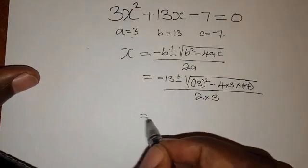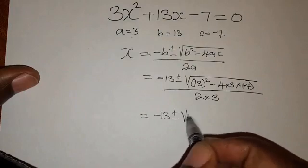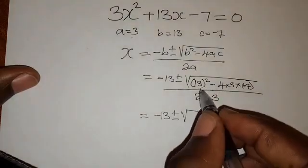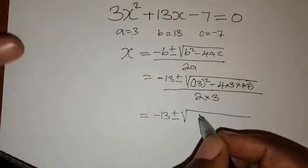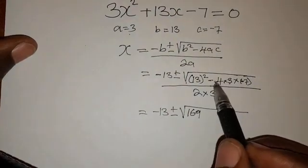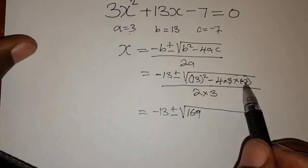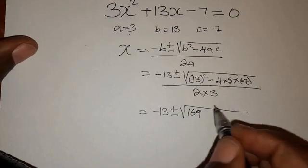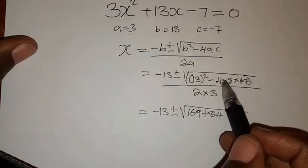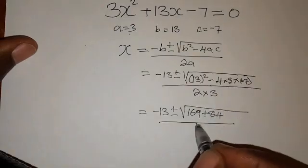So we are going to have negative 13 plus or minus the square root. Let's first work out what is in the square root. 13 squared is 13 times 13, which is 169. Then negative 4 times 3 is negative 12. Then negative 12 times negative 7 is positive 84, because you are multiplying negative and negative. Everything over 2 times 3 is 6.